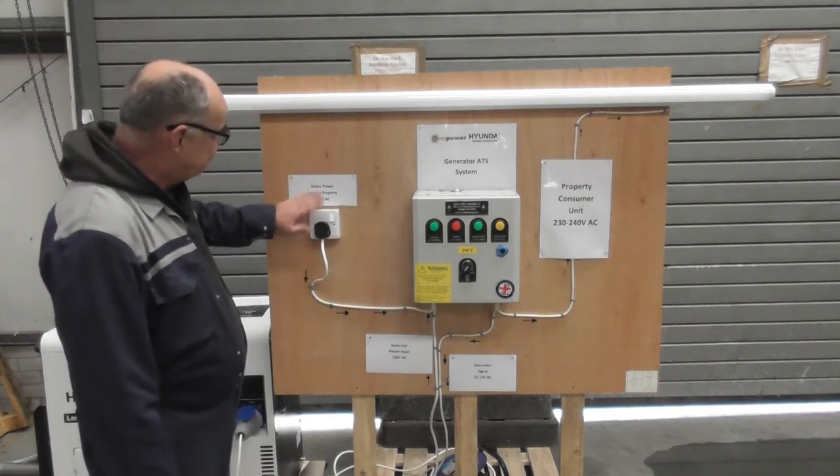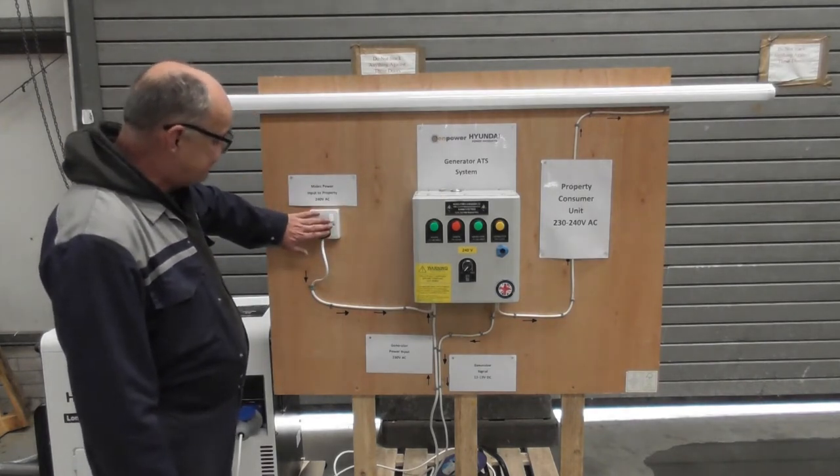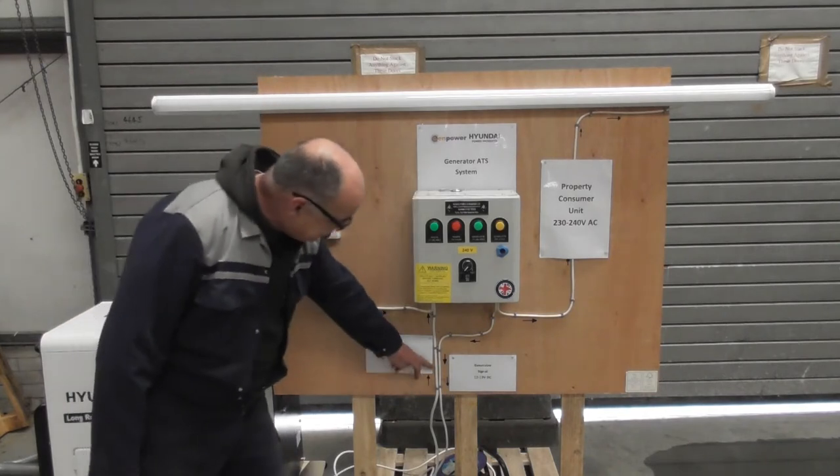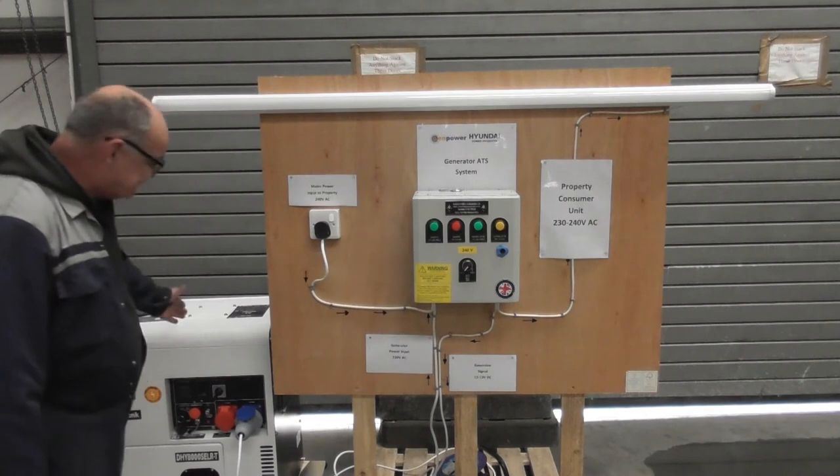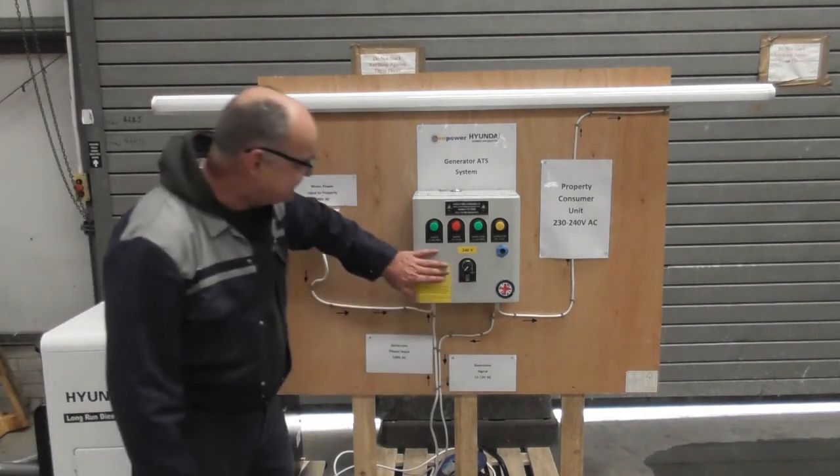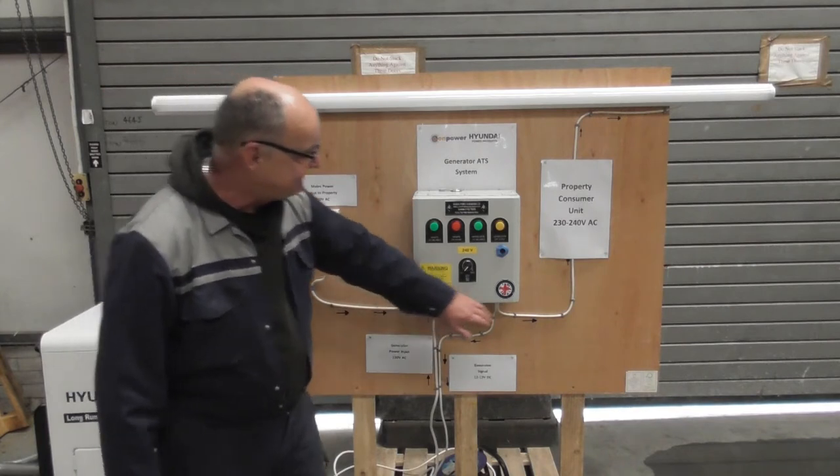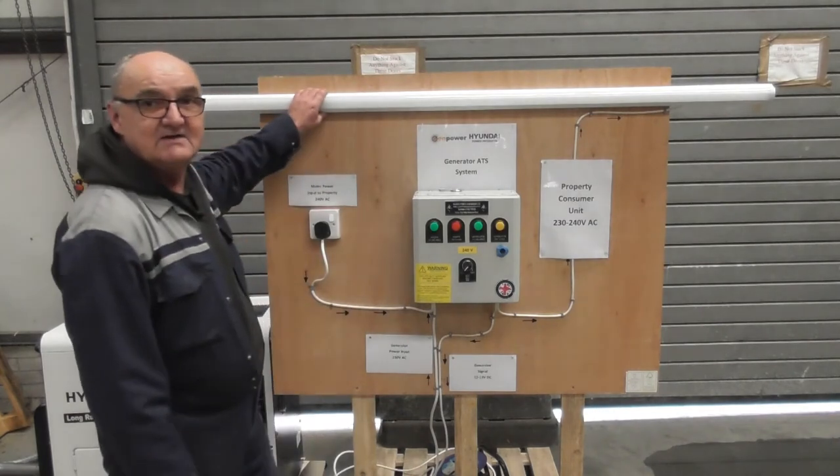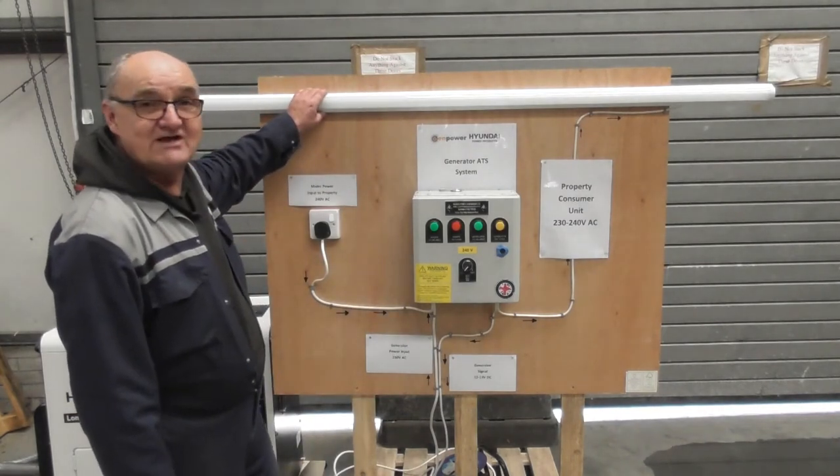So as you can see from the board here I've simulated the mains power coming in which comes into the ATS box. We also have generator power coming in and there's a generator here. We have a signal going out to the generator from this box and then between this box we have the mains outlet via the consumer unit to the property's power supply. So we've just demonstrated in operation.